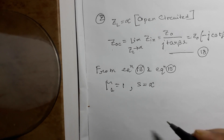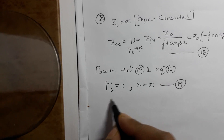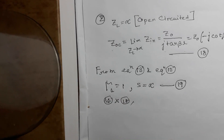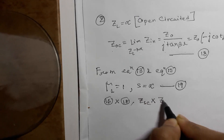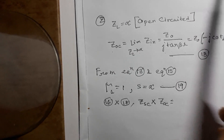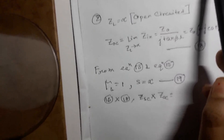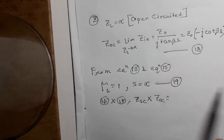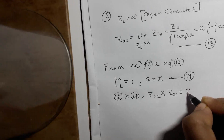If we multiply equation number 16 and equation number 18, then Zsc times Zoc — what will be the value of Zsc times Zoc? Working this out gives Zsc times Zoc equal to Z0 squared.